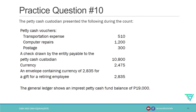In computing petty cash shortage, we get the difference of the petty cash accounted and petty cash accountability. If the petty cash accounted is lower than the petty cash accountability, there is a shortage. Petty cash accountability consists of the petty cash ledger balance and petty cash impurities. Petty cash impurities are items found in the petty cash box but do not belong to petty cash.